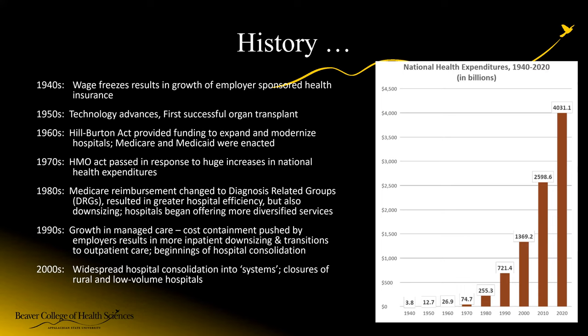In the 1960s, we had the Hill-Burton Act, which provided funding to expand and modernize hospital facilities. Also in 1965, Medicare and Medicaid were enacted — care through Medicare for those over 65 and disabled, and Medicaid for individuals below a certain percentage of the federal poverty line. In the 1970s, specifically 1974, the HMO Act was passed in response to huge increases in national health expenditures, allowing HMOs to more closely control care. In the 1980s, the diagnosis-related groupings model began to be instituted — that's 1984.